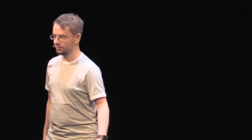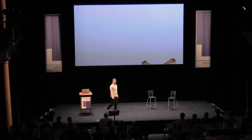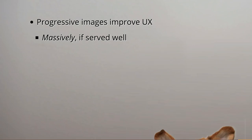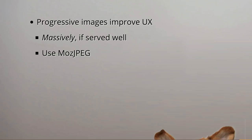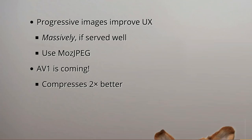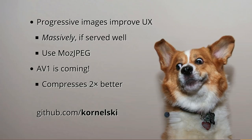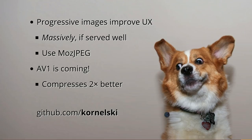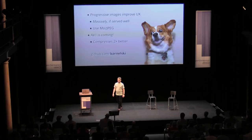To recap: for now, progressive images improve UX a lot. If you do the server-side trick with chopping them into bits over an HTTP/2 connection, that's a wow effect. You can use MozJPEG to create those images — that's the best encoder for images for the web while we're still using JPEGs. And we're eagerly waiting for AV1 — it's coming, it's already there for videos. You can be sure I'll be working on more encoder tools and releasing libraries you can plug into your infrastructure. Watch what I'm doing on my GitHub, you can follow me there.